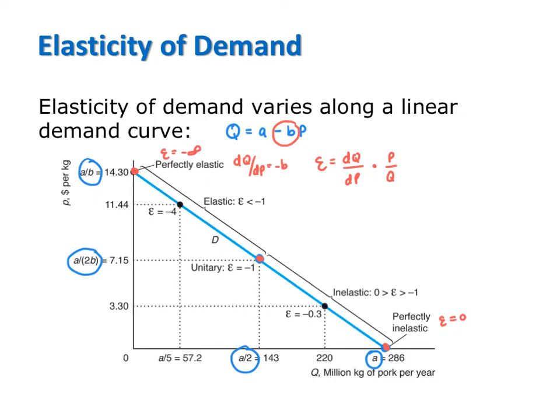Consider, for example, when we are at the quantity intercept. At this point, quantity is a and price is zero. When we plug in a price of zero, we get an elasticity of demand that equals zero.